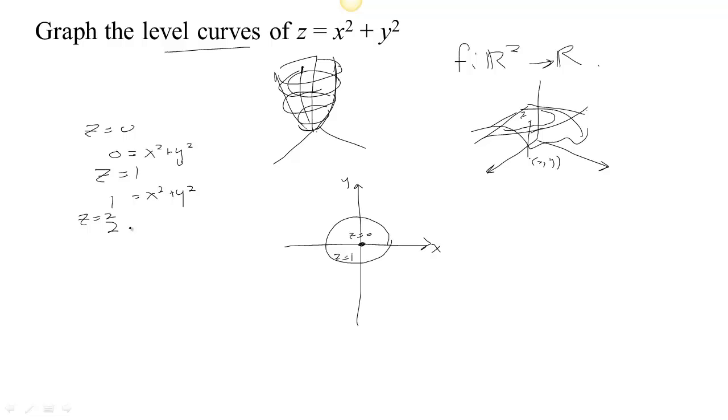If we set z equal to two, then we have two equals x squared plus y squared. Let's see, this is a circle of radius root two. Root two is about 1.4, so this circles in a little bit closer. And so there's the z equal two level set. It's a circle of radius root two.